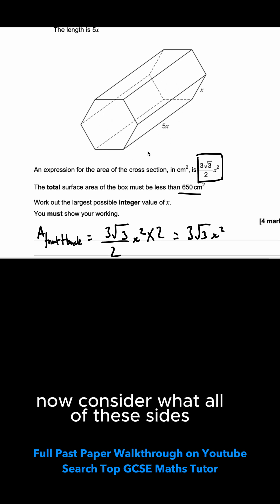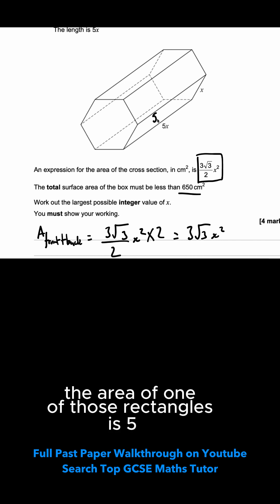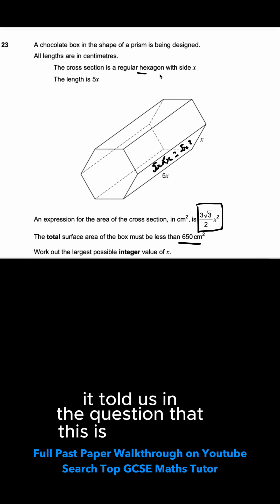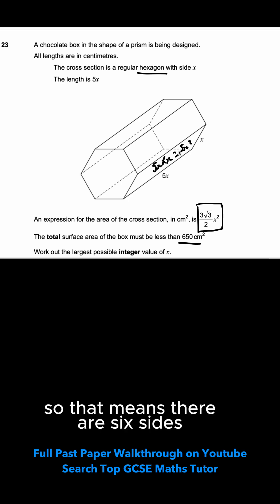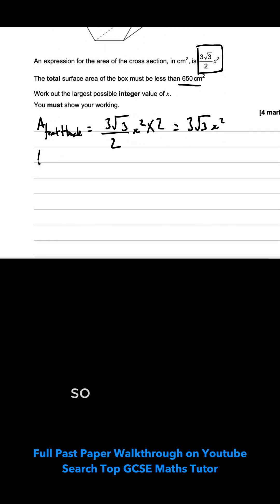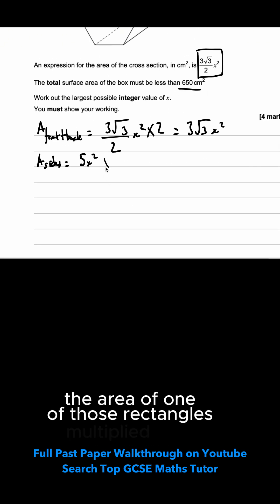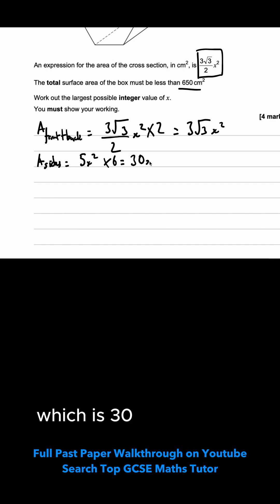I need to now consider what all of these sides would add up to. That's a rectangle. So to work out areas of rectangles, I just multiply the base by the height. So the area of one of those rectangles is 5x times by x, which is equal to 5x squared. How many sides or how many faces do I have going around? It told us in the question that this is a hexagon. So that means there are 6 sides. I need to multiply this by 6. So the area of the sides is equal to 5x squared, the area of one of those rectangles, multiplied by 6, which is 30x squared.